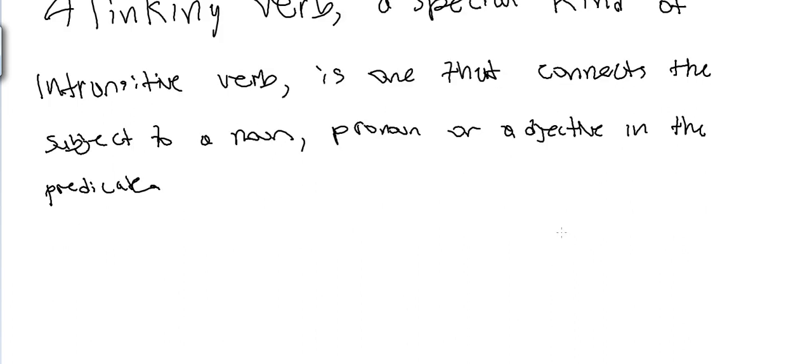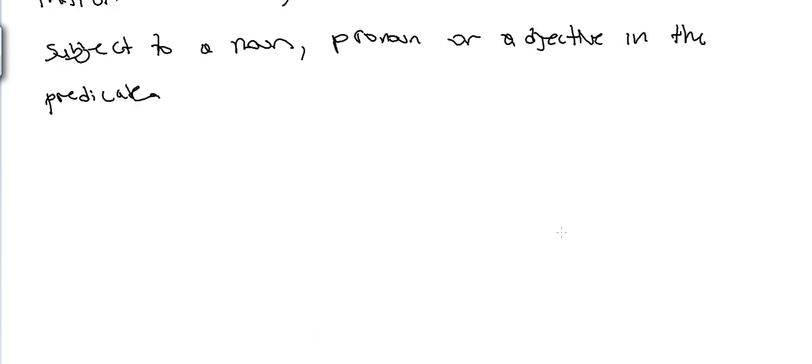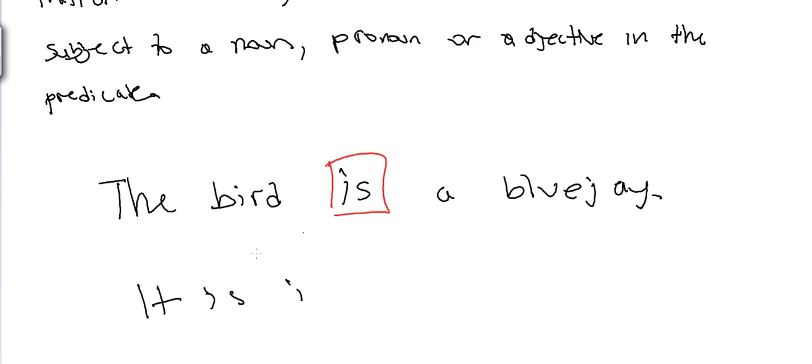For example, 'the bird is a blue jay' or rather 'it is I.' So now we see the linking verb. The linking verb is connecting the subject to a noun, pronoun, or adjective. Here we see it's a noun once again.